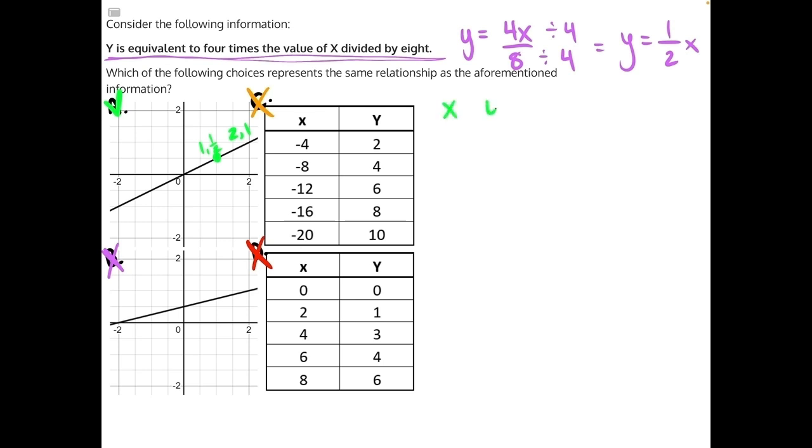If we were to plug in those values, we would have a small table where our x values are 1 and 2, and our outputs are 1 half and 1. So if we plug that into our equation, y equals 1 half x, we would have 1 half times 1 and 1 half times 2.